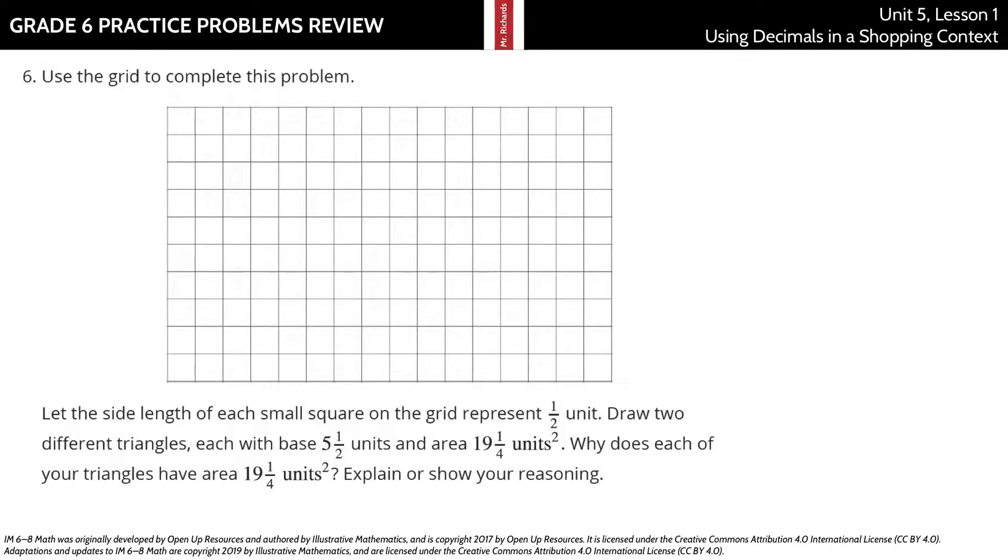Problem number 6. Use the grid to complete the problem. Let the side length of each small square on the grid represent half a unit. And that's really important to notice. Half a unit here. Draw two different triangles, each with a base of 5 and 1/2 units and an area of 19 and 1/4 square units. Why does each of your triangles have an area of 19 and 1/4 square units? Explain or show your reasoning.